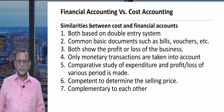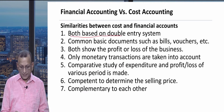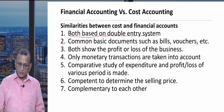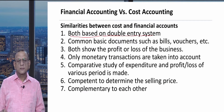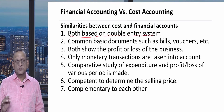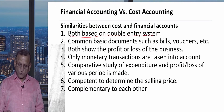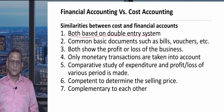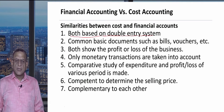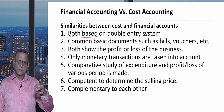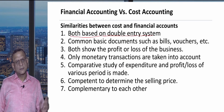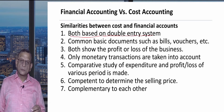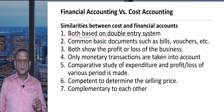One: both are based on the double entry system. Every transaction has two aspects — the dual aspect concept — meaning debit and credit. All transactions recorded in cost accounts are also based on this double entry system.